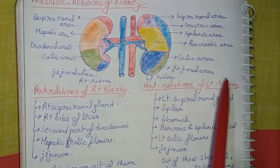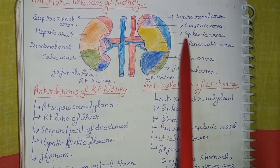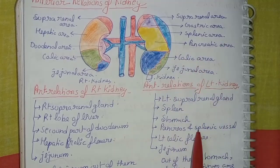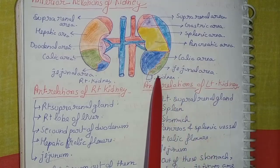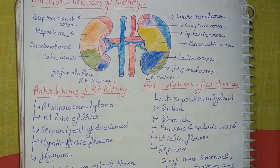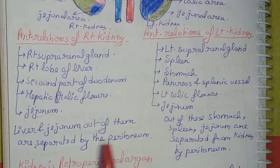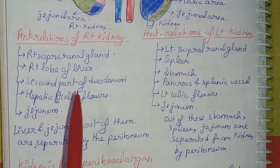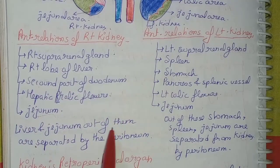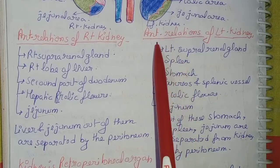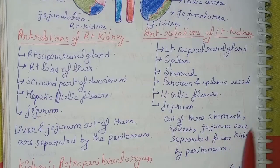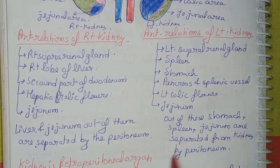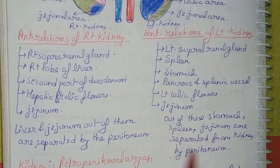For the left kidney: the suprarenal area represents the left suprarenal gland, the gastric area represents the stomach, the splenic area represents the spleen, the pancreatic area represents the pancreas and splenic vessels, and the colic area represents the left colic flexure, and the jejunal area represents the jejunum. In the anterior relation of the right kidney, the liver and jejunum are separated from the kidney by peritoneum; in the left kidney, the stomach, spleen, and jejunum are separated by peritoneum.